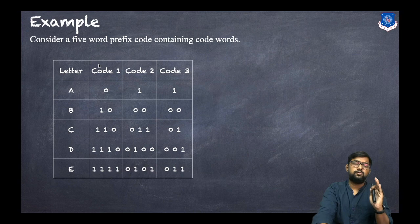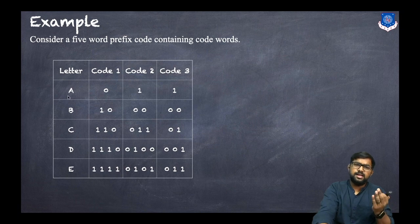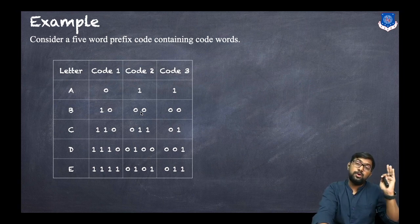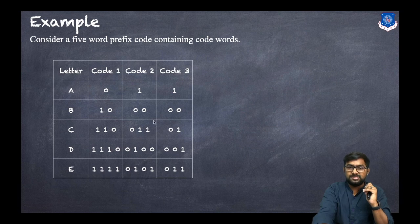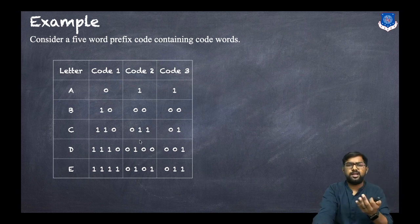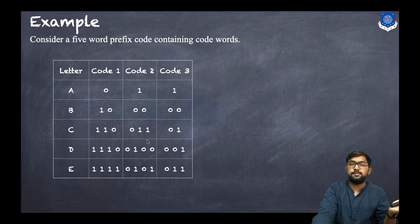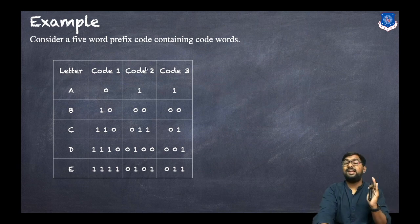Consider code two: a is assigned '1', b is assigned '00'. For c, '00' and '1' cannot be used as prefixes, so c gets '011'. For d, '0110' is used since '0', '1', and '011' are not prefixes of it. For e, '0101' is also different. So code two is also a valid prefix code.